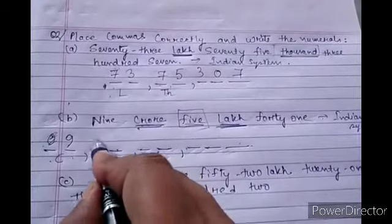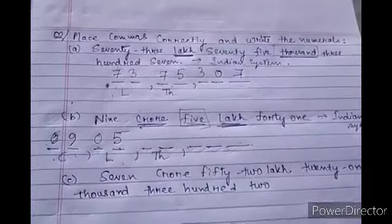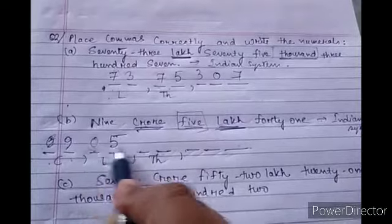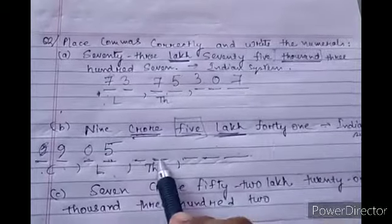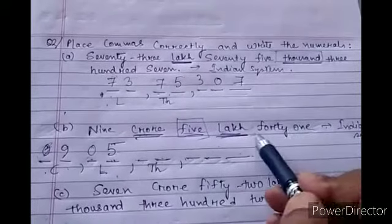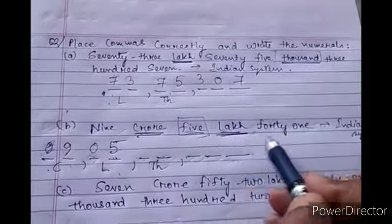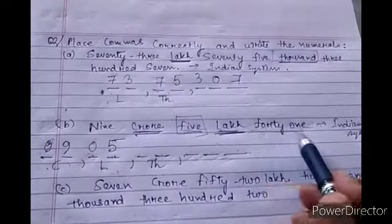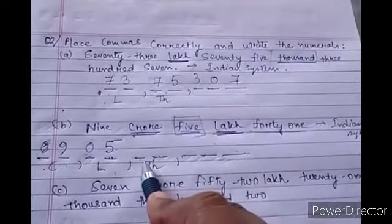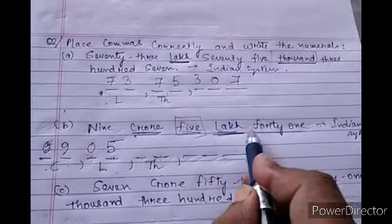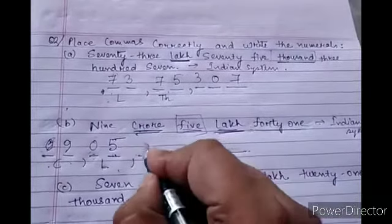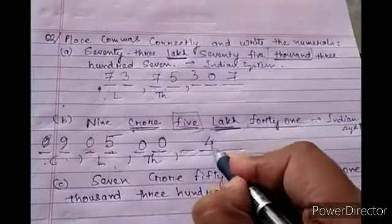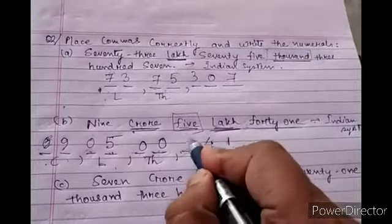Five lakh — in the lakh place we write zero five, meaning 05, so that it's five and not fifty. Thousand — there is no thousand value here, only forty-one, which sits in the ones and tens place. Since there's no thousand, we write zero zero in the thousand place, then forty-one.